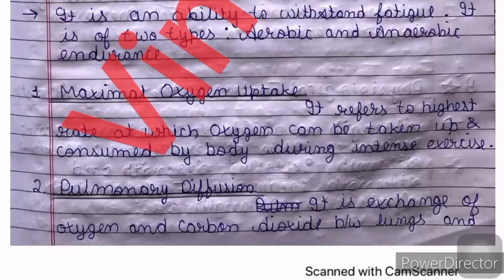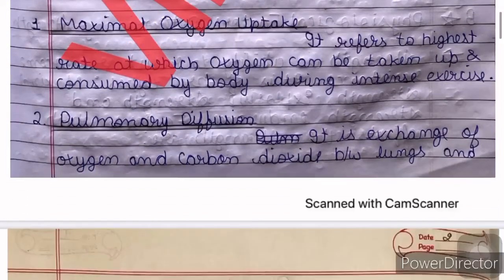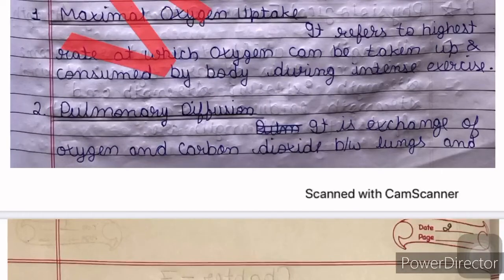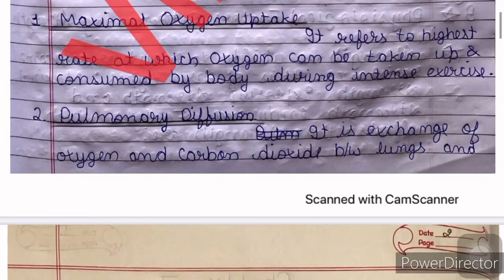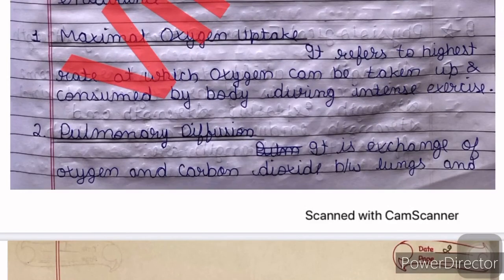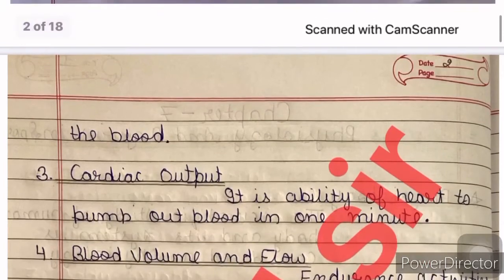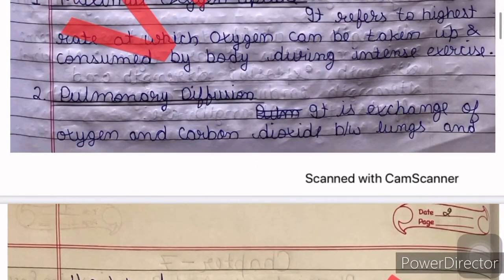The second point is Pulmonary Diffusion. Pulmonary diffusion is the exchange of oxygen and carbon dioxide between the lungs and the blood. In our blood, carbon dioxide and oxygen are exchanged. More and faster pulmonary diffusion improves the endurance — the speed of diffusion improves the endurance.